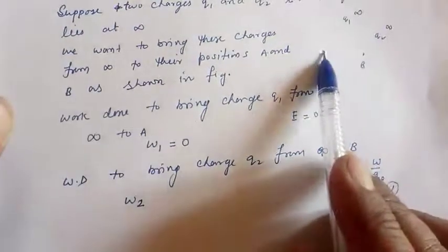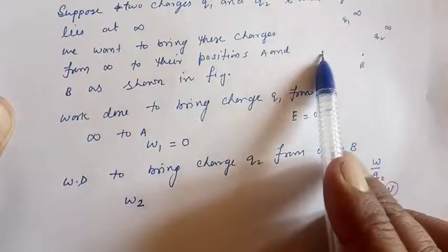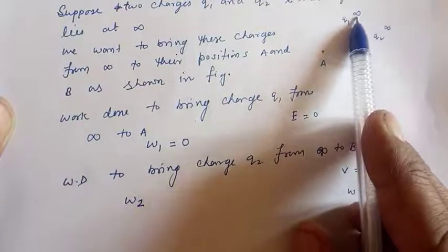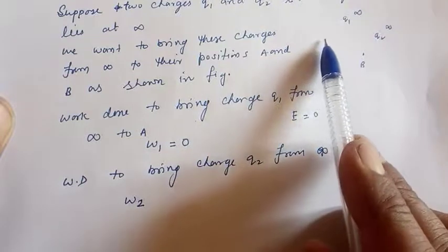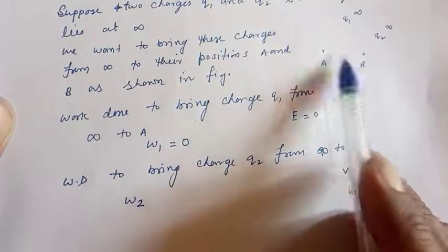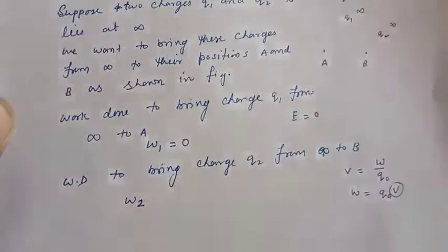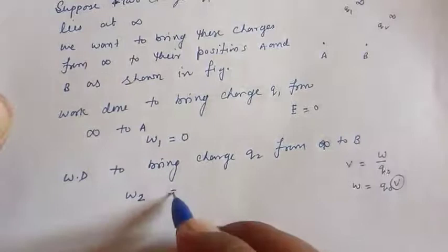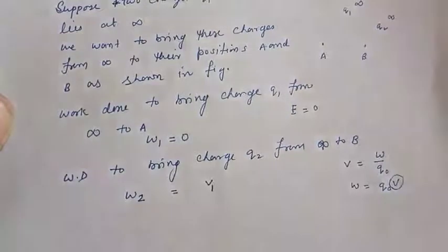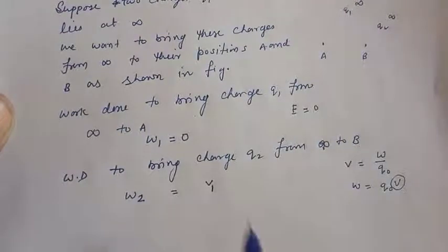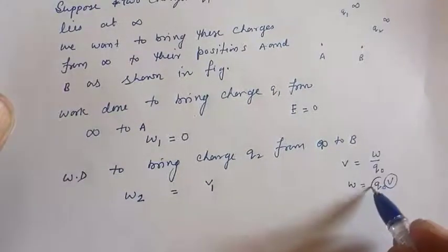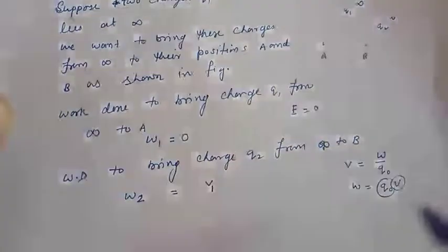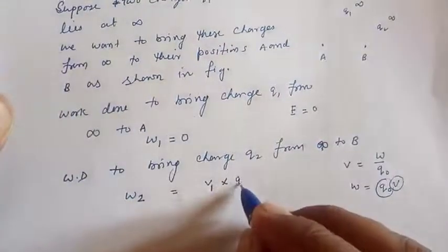So whose potential? Potential due to the charge q1 at point a. Because now charge q1 is at point a. So w2, the work done, equals v1, potential due to the charge q1, times q0, which is charge q2. So here it will be v1 times q2.